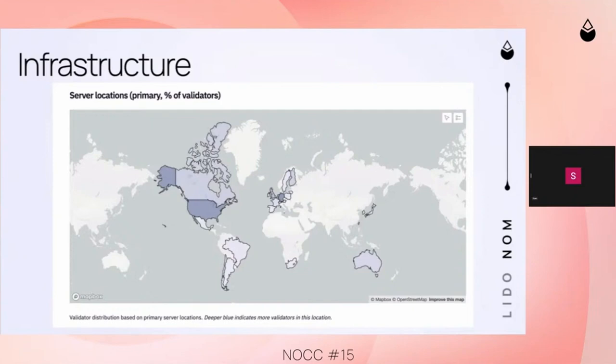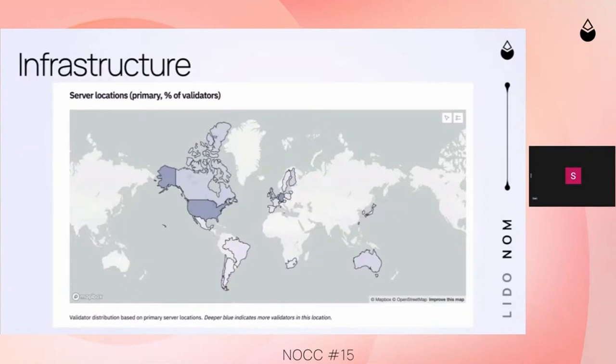We track a bunch of different stats regarding geolocation. This particular one is the percentage of validators running on servers in different countries. Interesting to see this quarter — and last quarter as well — is that in Africa and Latin America, we're starting to show validators running there. Their performance started off not that well, but they've actually improved quite a bit over the last weeks, which is very encouraging.